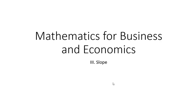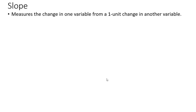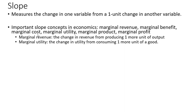In this video, we're going to look at the concept of slope and do a number of examples. Slope measures a change in one variable from a one unit change in another variable. Important slope concepts in economics include marginal revenue, marginal benefit, marginal cost, marginal utility, marginal product of labor, and marginal profit. These are all slope concepts.